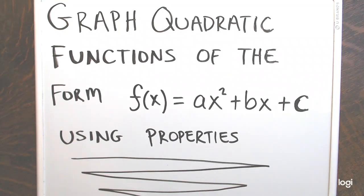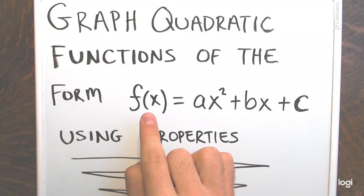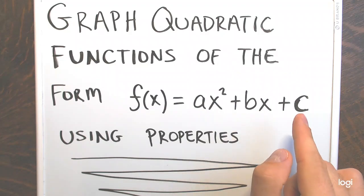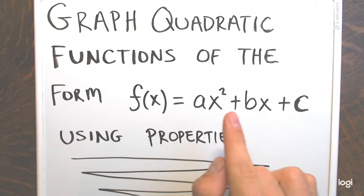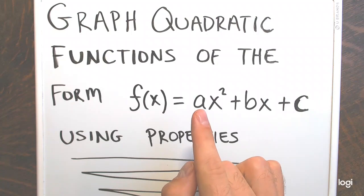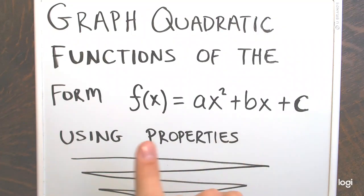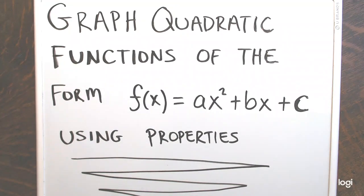Hello everyone, and welcome to this video on graphing quadratic functions of the form f(x) or y equals a times x squared plus b times x plus c, where a, b, and c are real numbers and a is not zero. We'll be graphing equations of that form using properties of parabolas. Remember, the graph of a quadratic function is a parabola — one of those U-shaped curves either opening up or down.